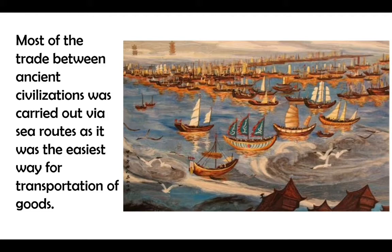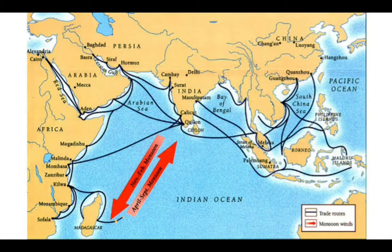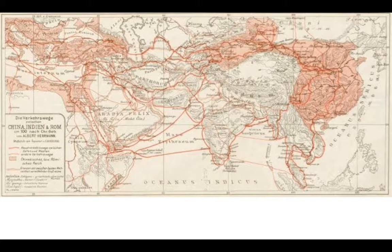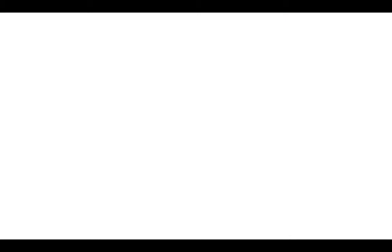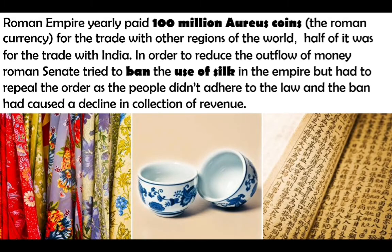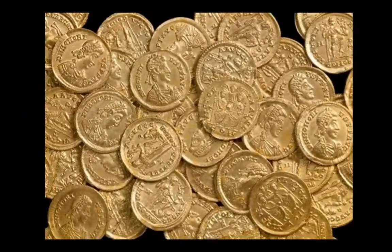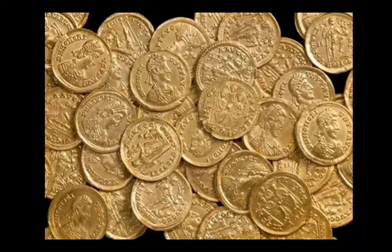As there was no proper road infrastructure at the time, most trade was carried out via sea routes. One of the most significant and oldest was the monsoon marketplace — a major convergence zone between the east and the west via India, thanks to the monsoon. The famous Roman Empire is known to have been a huge buyer of Indian and Chinese goods and paid heavily for it. The prices were so high that many Roman senators and emperors tried to limit and even ban the import of goods like silk, but failed miserably.